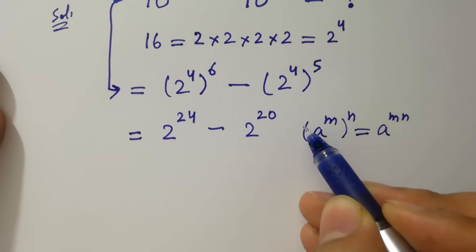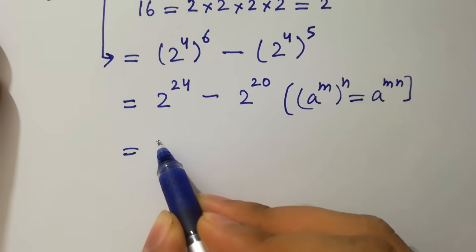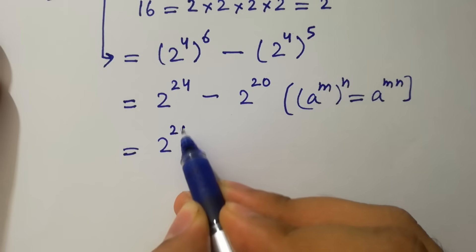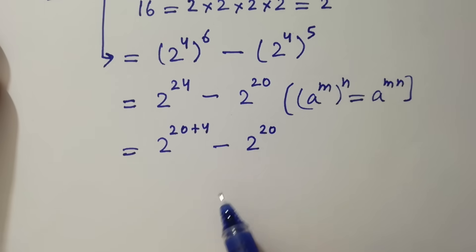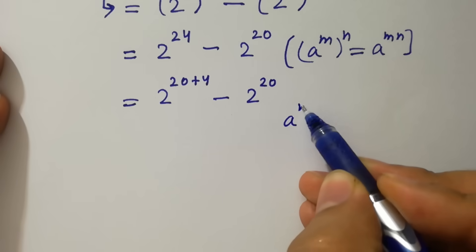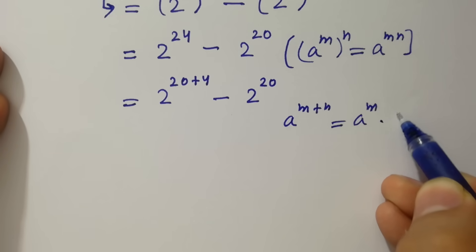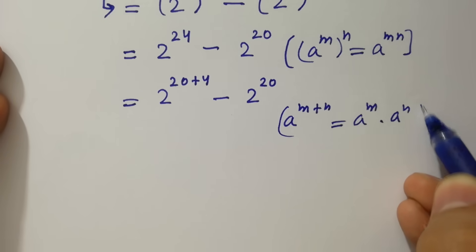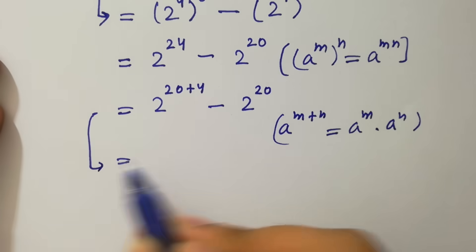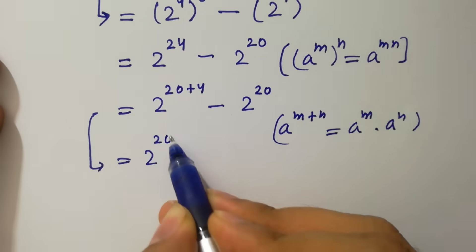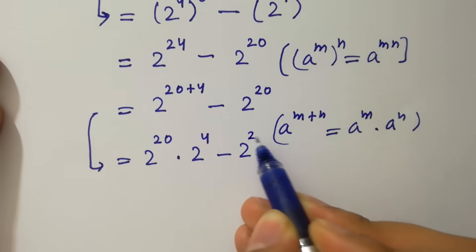This is the same as 2 to the power 20 plus 4 minus 2 to the power 20, since a to the power m plus n equals a to the power m times a to the power n. So it becomes 2 to the power 20 times 2 to the power 4 minus 2 to the power 20.